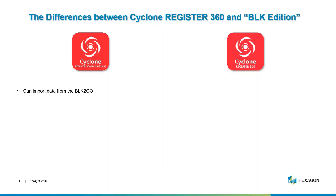The BLK Edition can only import data from the BLK2Go and the BLK 360 — that is it. It can't import any other data type. That's how it's locked down.